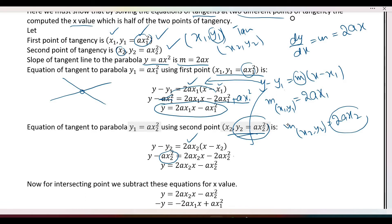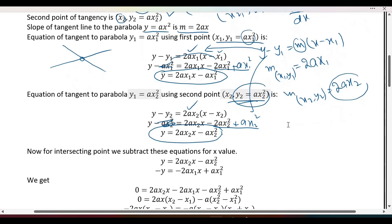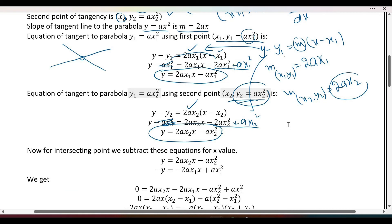On the other side it will be positive ax2 squared, and we also have minus ax2 squared. Now we have two equations and we need to solve them simultaneously. We have to subtract one from the other to eliminate terms.